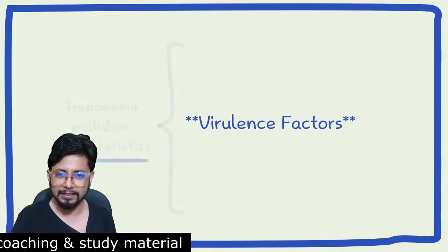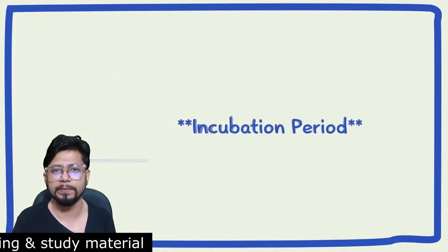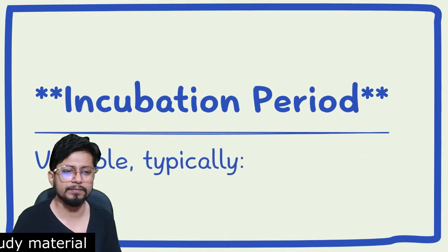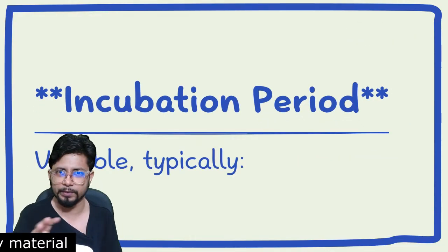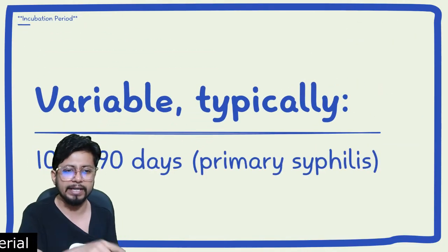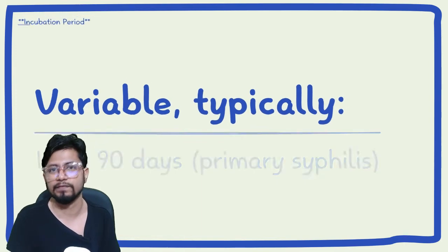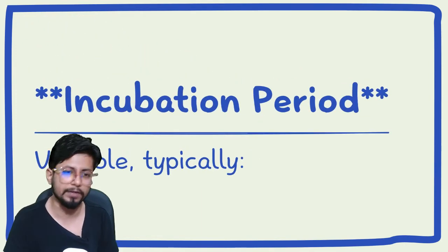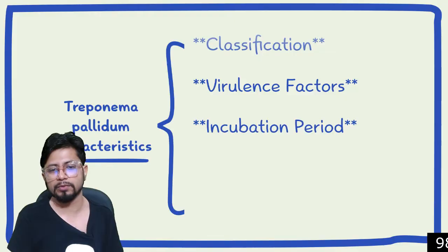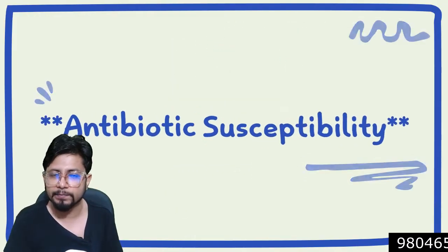The incubation period of Treponema pallidum ranges from approximately 10 days to 90 days in cases of primary syphilis infection.